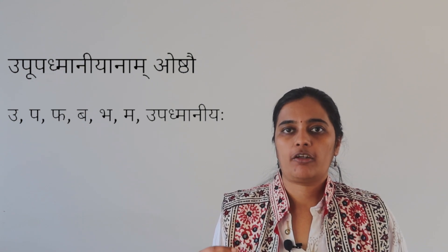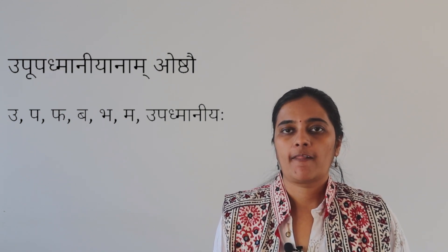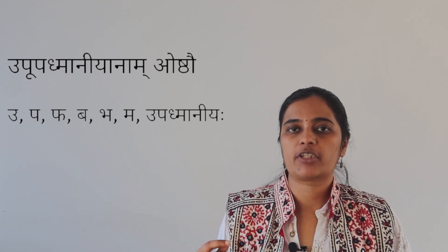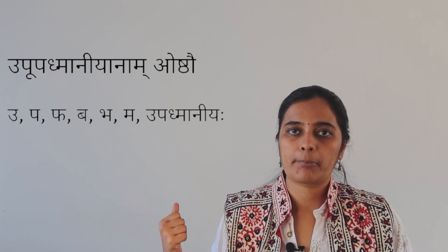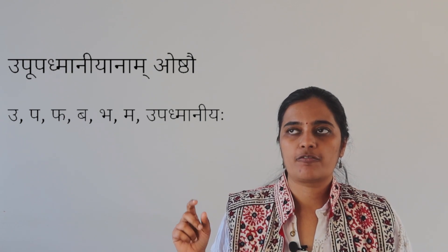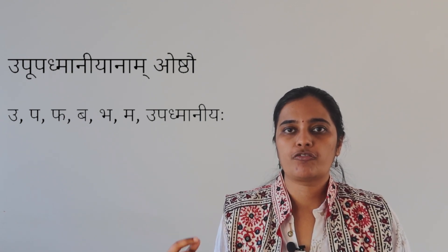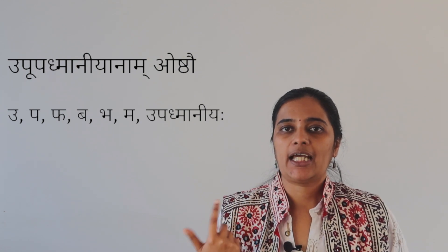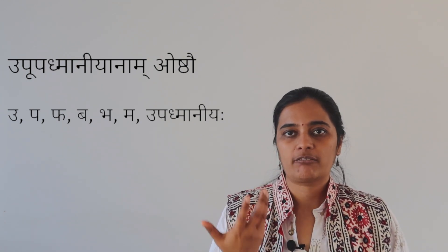The next sutra is 'Upupadhmaniyaanam Oshthau.' U refers to all 18 variations of the vowel U. Pu refers to the Pavarga — P, Ph, B, Bh, M. Upadhmanyaha is that 'ph' sound which comes when Visarga is followed by P or Ph, like in 'punah punaha.' These sounds are produced from the lip region and therefore they are called Oshthyaha.